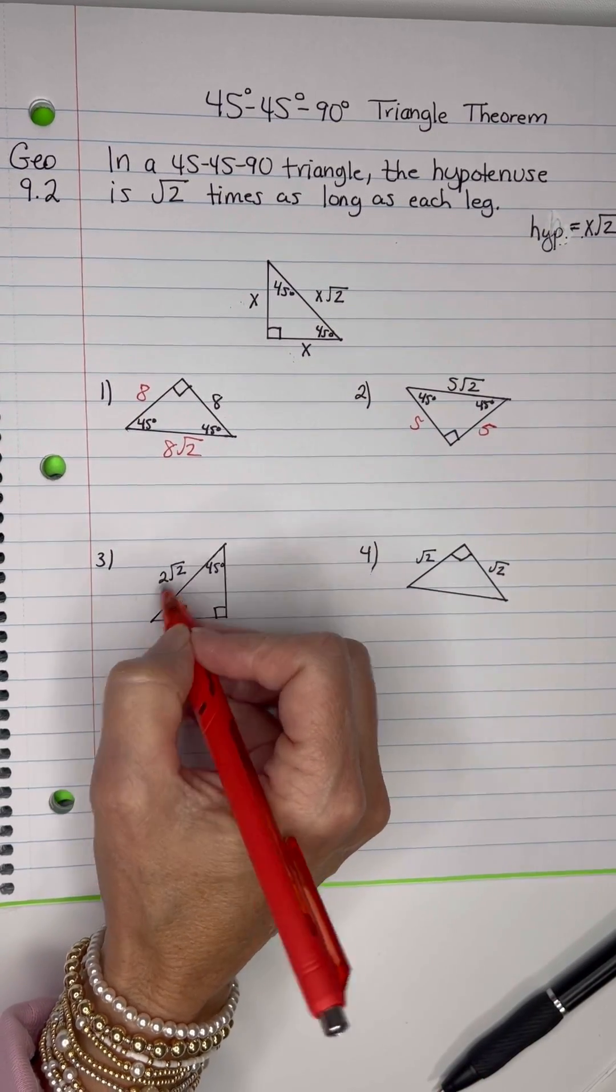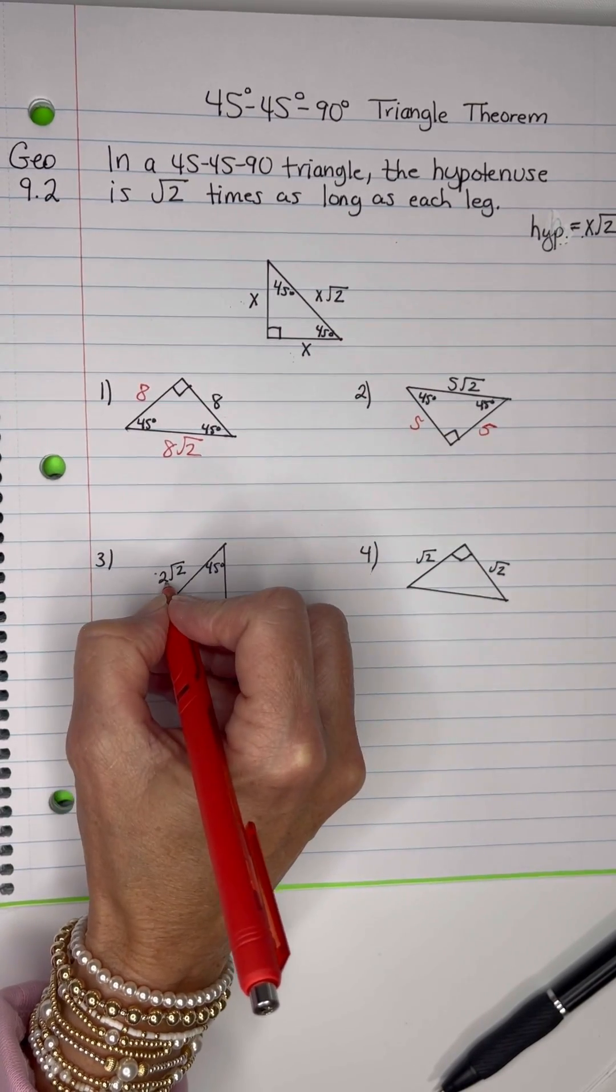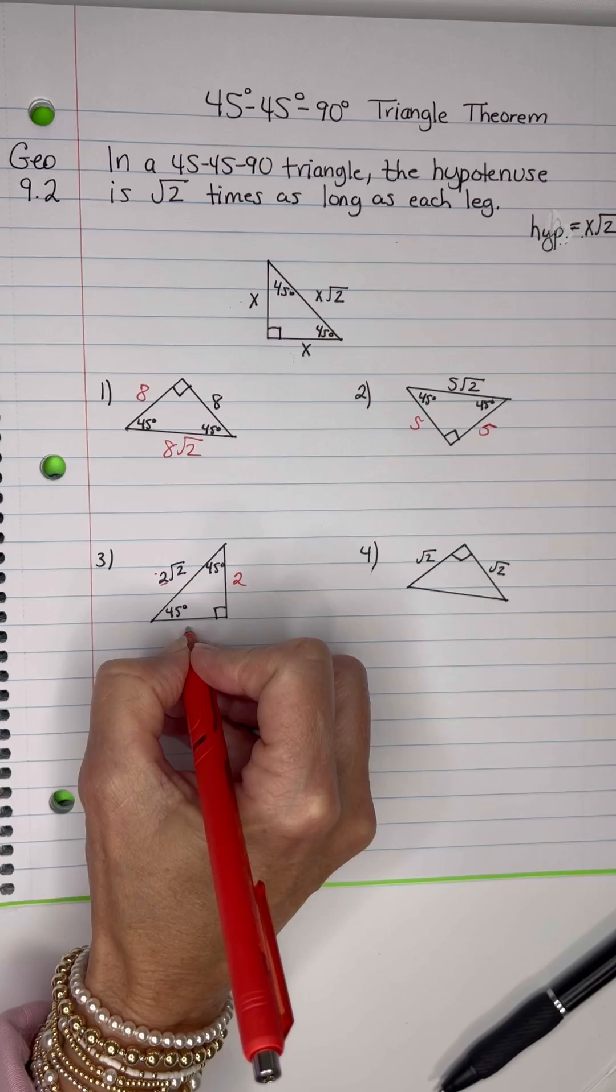Here we have one where the hypotenuse is 2 root 2. So that means the legs would be whatever is in front of root 2. So that's 2 and 2.